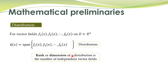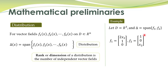The rank, also called dimension, of a distribution is the number of independent vector fields. To demonstrate this, we take a distribution with two vector fields f1 and f2 whose span is a distribution. These two vectors are independent because we cannot get one by any scalar multiple of the other. Therefore, the dimension of this distribution is equal to 2 for all x in the domain D.